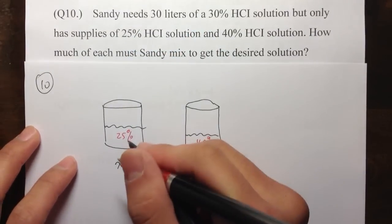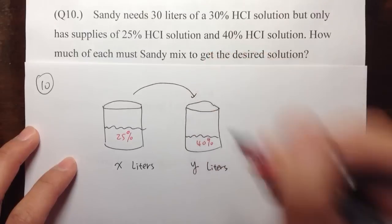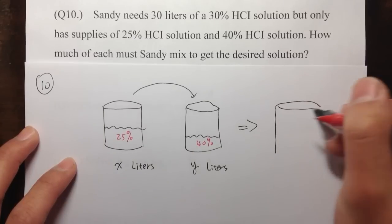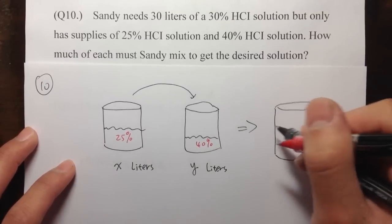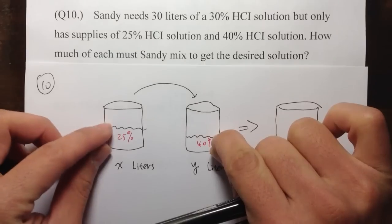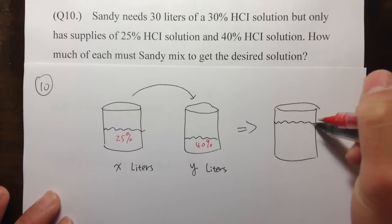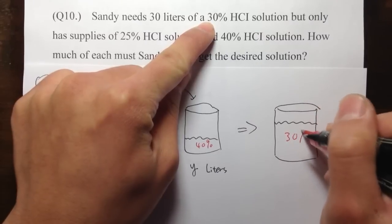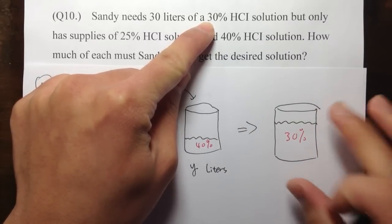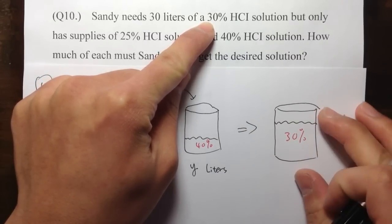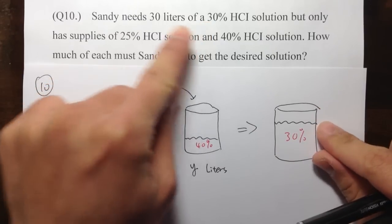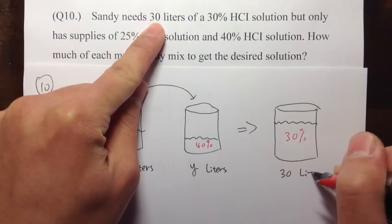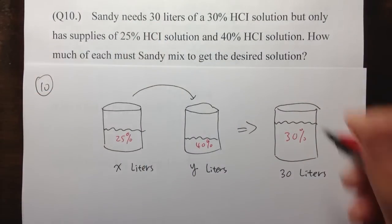The idea is that you want to take this and pour it in here to produce the final solution, which is 30%. That's what you want — the 30% solution and the total amount of 30 liters.